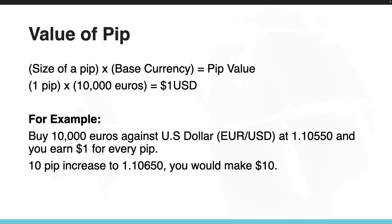Taking this further, let's look at this example. We buy ten thousand EUR against the US dollar — EUR/USD — at 1.10550, and you earn one dollar for every pip. With a ten pip increase to 1.10650, you will make ten dollars.